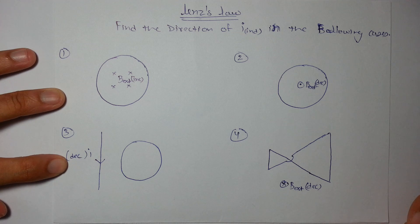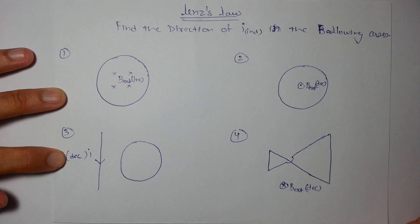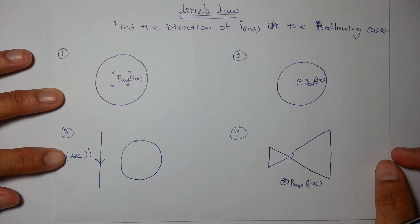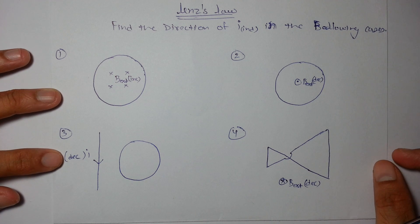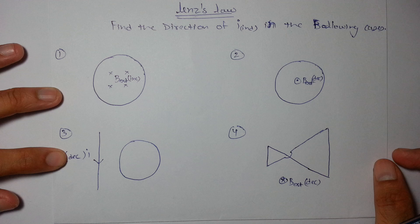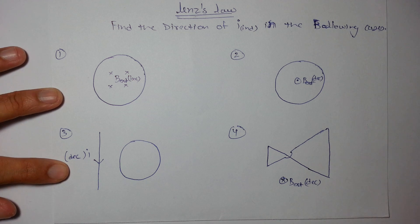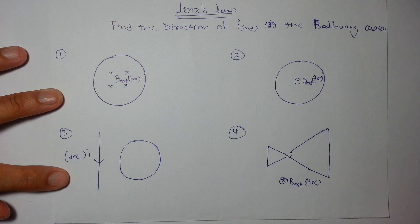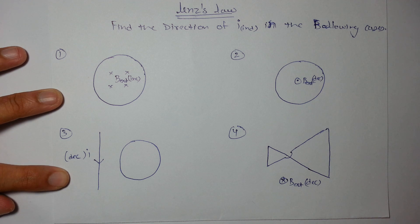Let's start with Lenz's law. This law deals with the direction or the polarity of induced EMF. It opposes the changes due to which it is caused — it may support the field, it may oppose the field, but it always opposes the changes.